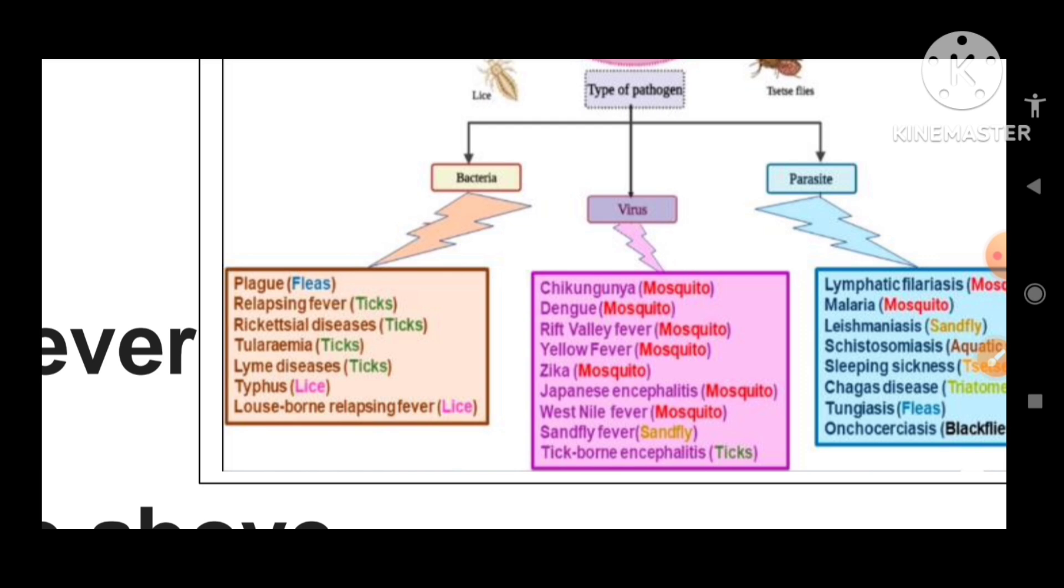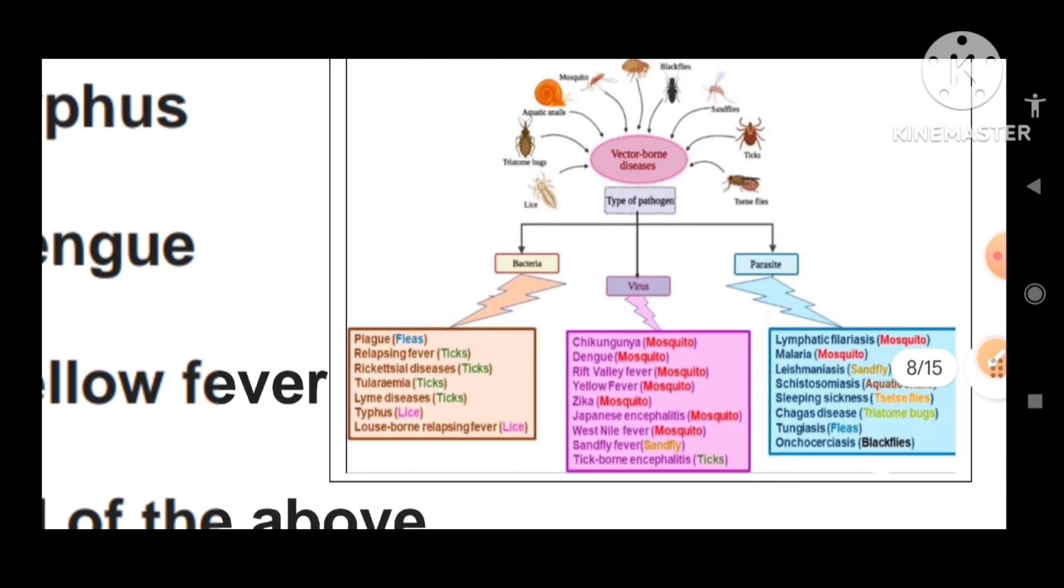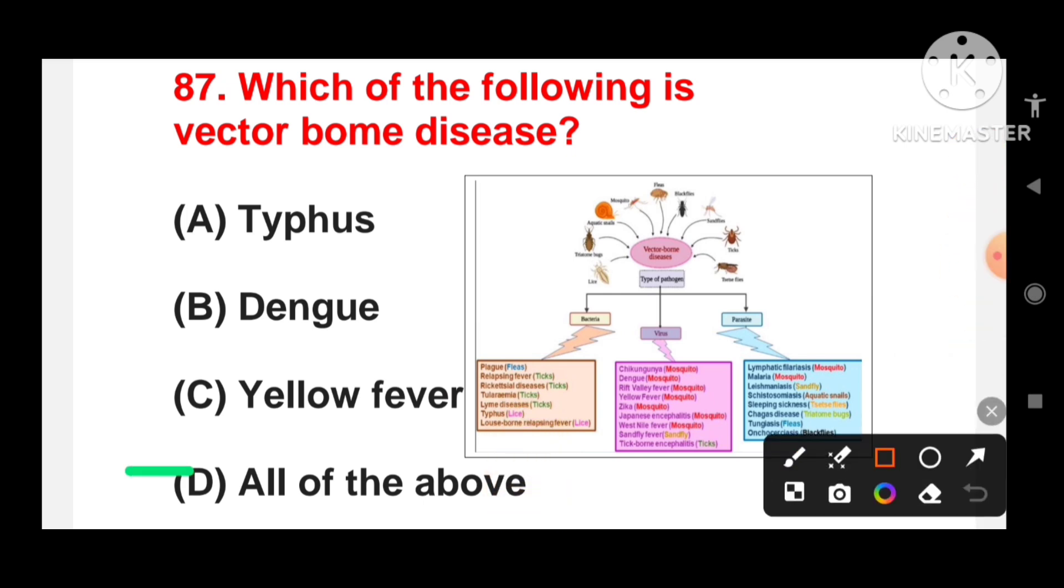Viral diseases include chikungunya from mosquitoes, dengue, rift valley fever, yellow fever, zika, Japanese encephalitis, West Nile fever, sandfly fever and tick-borne encephalitis. Parasitic diseases include lymphatic filariasis, malaria, leishmaniasis, schistosomiasis, sleeping sickness, tungiasis and onchocerciasis. So the correct answer is all of the above. Typhus, dengue and yellow fever are all vector-borne diseases.